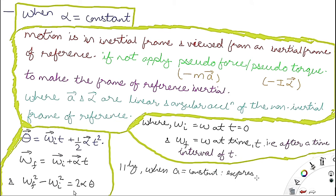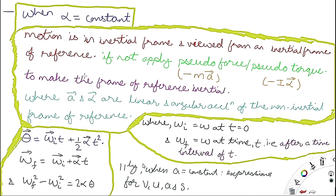When linear acceleration a is constant, the corresponding linear motion equations can be found by replacing: theta with s, alpha with a, omega-f with v, and omega-i with u. This gives the standard equations of linear motion.